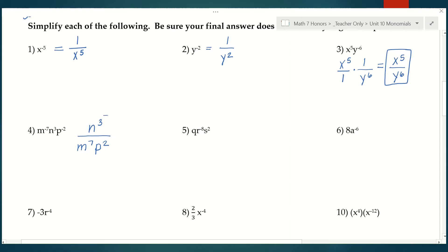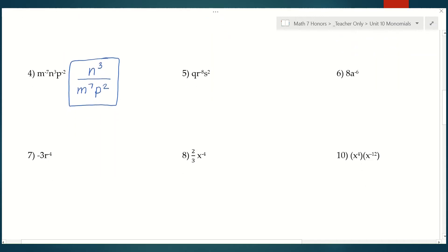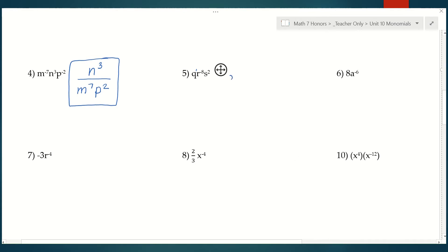Number 5 is really similar. Q has an exponent of 1 — remember, it's 1 if it's not written — so it's positive and stays in the numerator. R to the negative eighth, because it's a negative exponent, will go to the denominator. And s squared, because it's positive, will stay in the numerator. So rewriting this out, we have q s squared as our numerator over r to the eighth, where that 8 becomes positive when moved to the denominator.